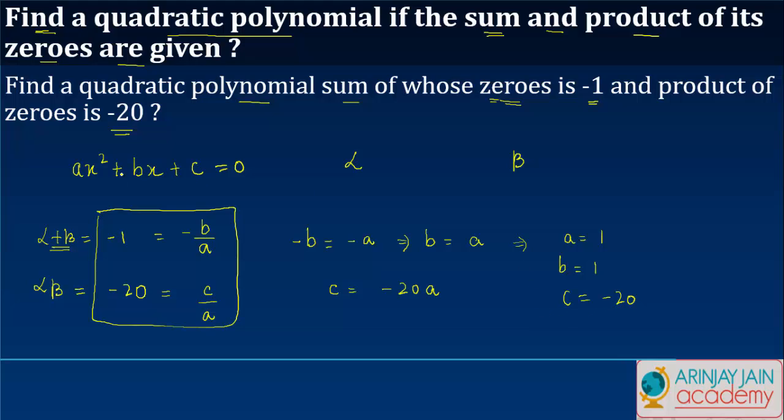If we plug these values over here we get x squared plus x minus 20 is equal to 0.